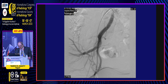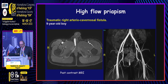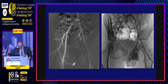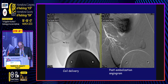High-flow priapism is usually due to traumatic arteriocavernosal fistula. This 8-year-old child had a post-traumatic arteriocavernosal fistula on the right side, visible on contrast-enhanced MRI. We embolize this using a microcatheter to reach the pudendal artery distal to the feeding artery, then go to the feeding artery and deliver the microcoils.